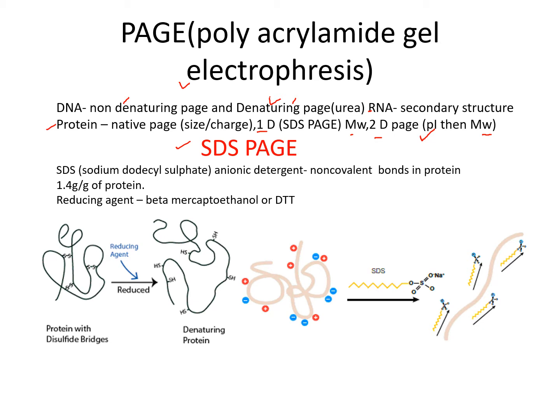The protein is linearized, and the disulfide bonds between the protein strands are broken by reducing agents like beta-mercaptoethanol or DTT, that is dithiothreitol. The reducing agent breaks the disulfide bonds and converts them into sulfhydryl groups, which linearizes the protein. SDS then masks all over the protein with negative charges, so there is no conformation of the protein — all proteins are masked with negative charges and will separate on the basis of their molecular weight.